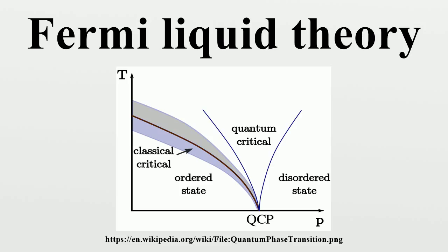Strontium ruthenate displays some key properties of Fermi liquids, despite being a strongly correlated material, and is compared with high-temperature superconductors like cuprates.